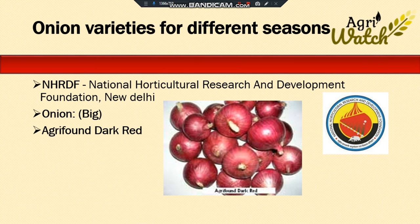First, I will be discussing about the big onion, that is the Agri Found Dark Red variety. The bulbs are dark red in color, globular in shape with tight skin, moderately pungent, and they will mature in 95 to 110 days after sowing. The average yield is 300 quintals per hectare.